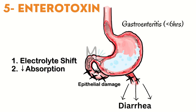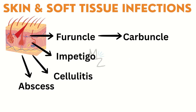The final exotoxin is enterotoxin. 'Entero' relates to the intestine or GI tract. It targets enterocytes within the epithelial lining of the GI tract. It produces dysfunctional proteins that destroy the enterocyte cell membrane and leak sodium and water. Cells can no longer absorb nutrients, water, and electrolytes, leading to diarrhea or food poisoning. Decreased absorption, electrolyte shifts, and inflammation of the GI lining — termed gastroenteritis — typically occur within six hours of eating contaminated food.